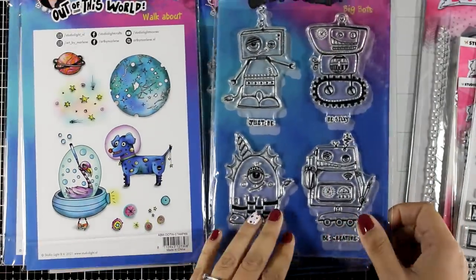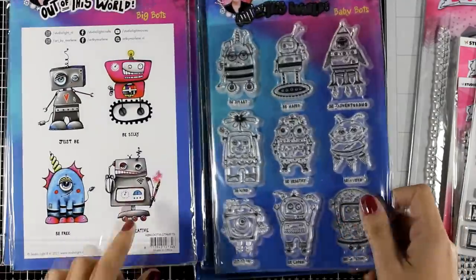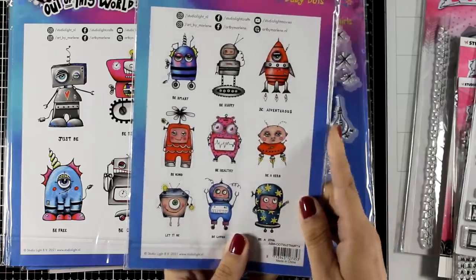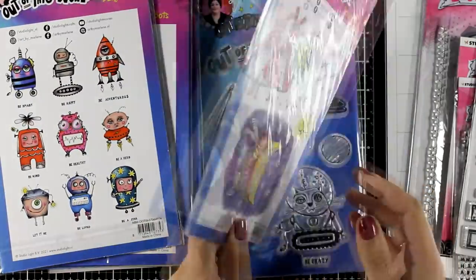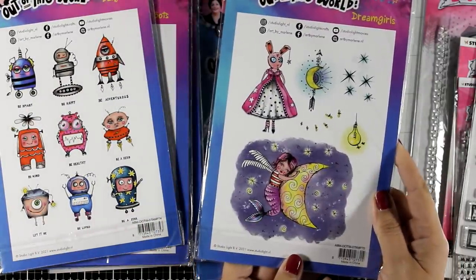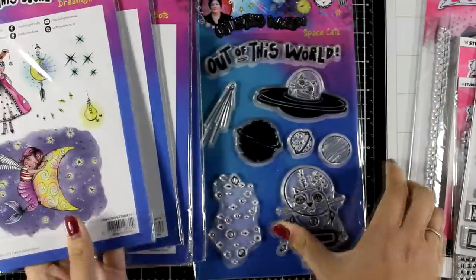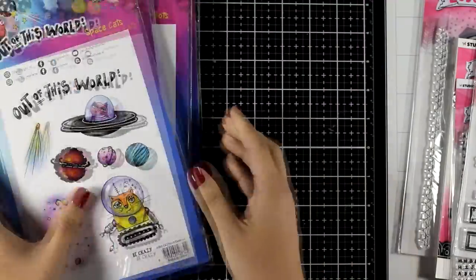And check out that flamingo in the UFO. Lots and lots of robots, so much fun, bigger and smaller. Here's another stamp set that I absolutely love, that girl on the moon and that's where I got the inspiration for today's project actually, but I'm not going to use this stamp set. And how about those space cats, absolutely darling.